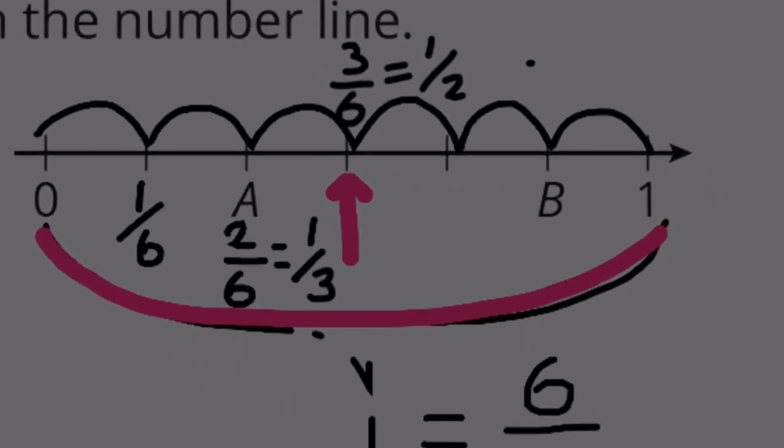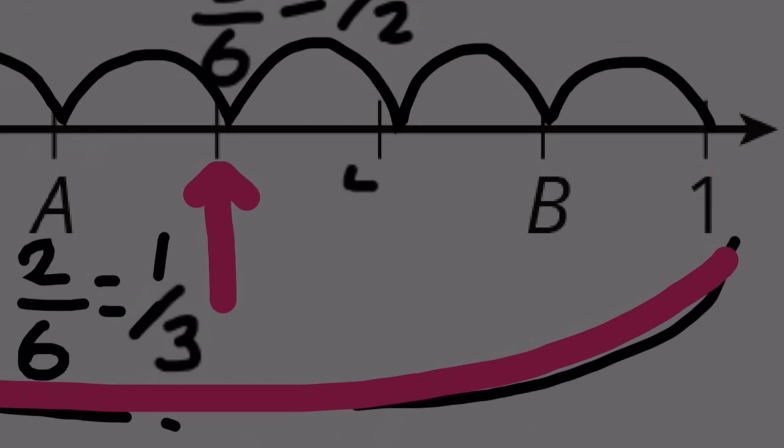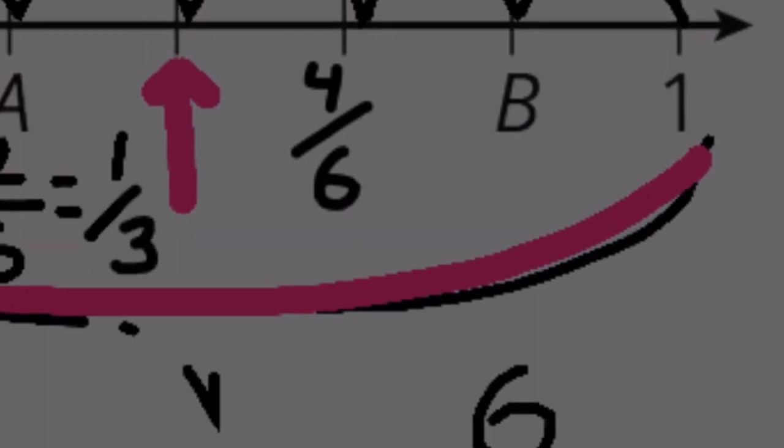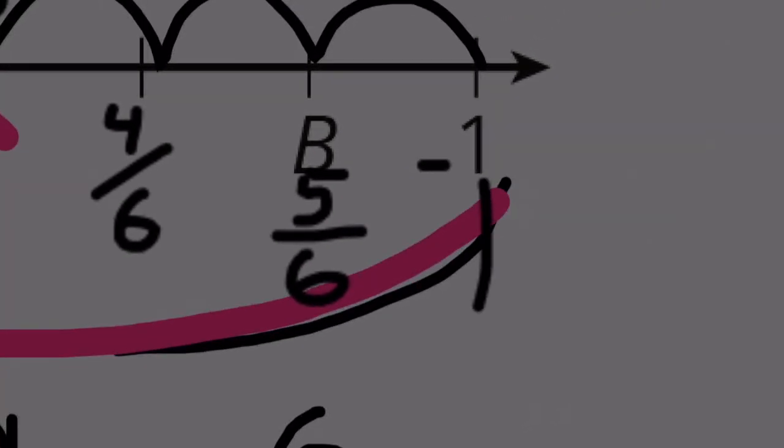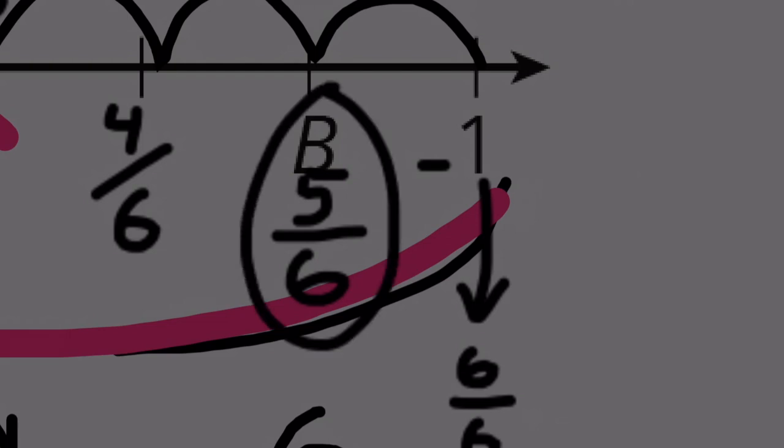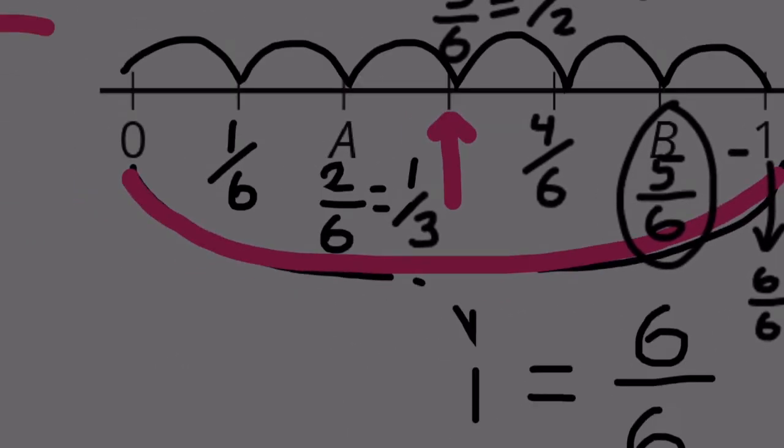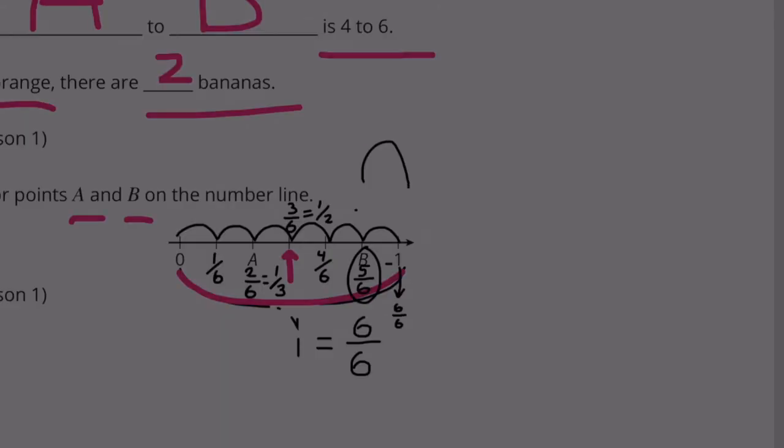And then this one is 4 sixths. B is going to be 5 sixths. And then obviously right here at the end, you're going to get to 6 sixths. So they needed the tick mark for B, which is 5 sixths. They needed the tick mark of A, which is 1 third. A equals 1 third, B equals 5 sixths.